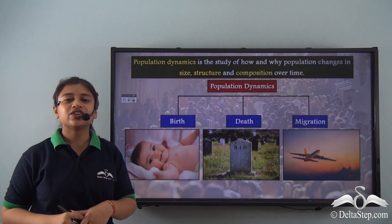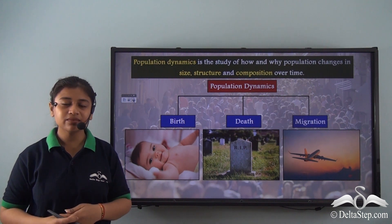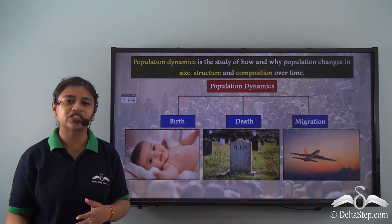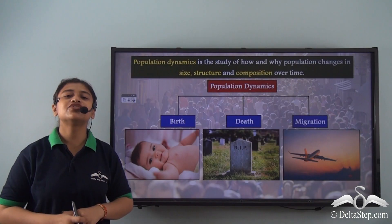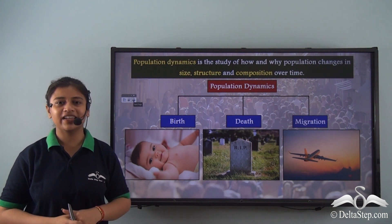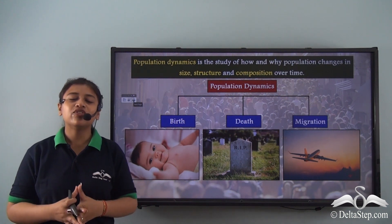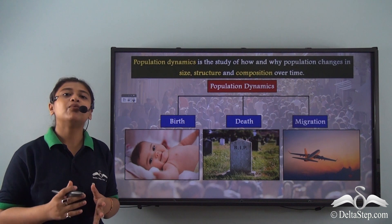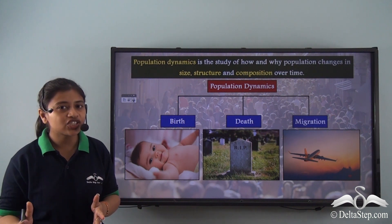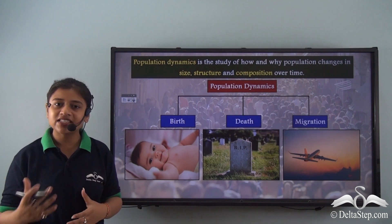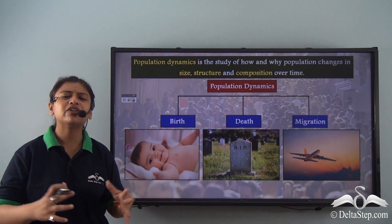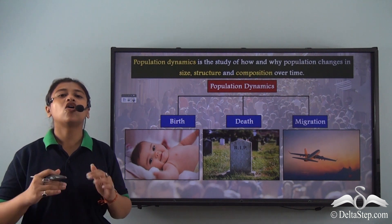As we have studied already in previous lessons, migration is the movement of people from one place to another to live in a new location, either permanently or for a short period of time. If people are moving out of a country or moving into a country, they are changing the composition, size, and structure of the population — either decreasing or increasing the population, or changing its composition as different people from different places are coming into or going out of the country.